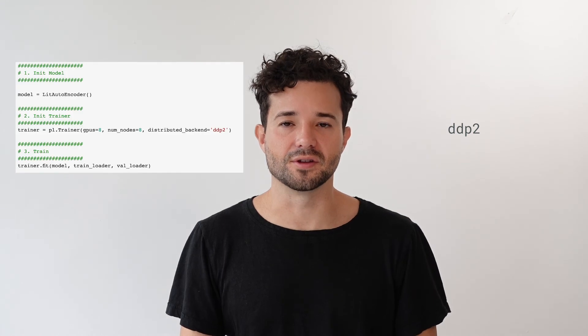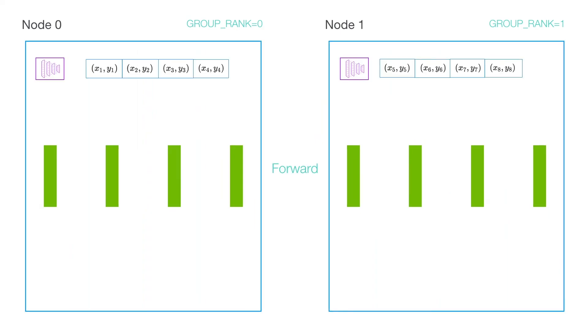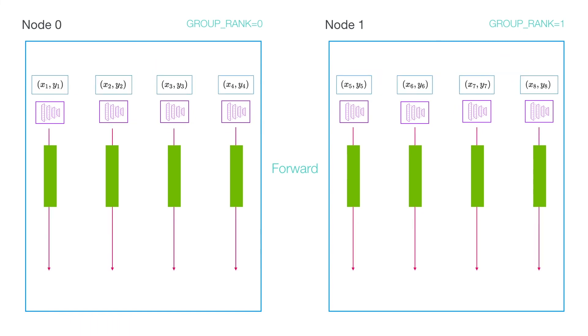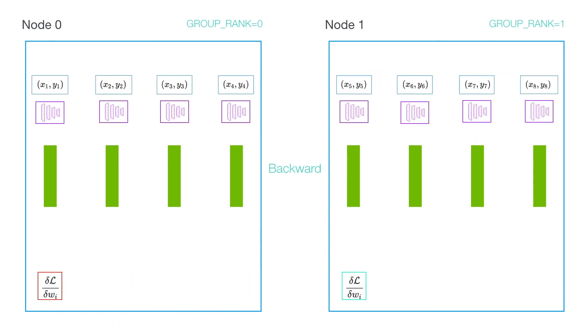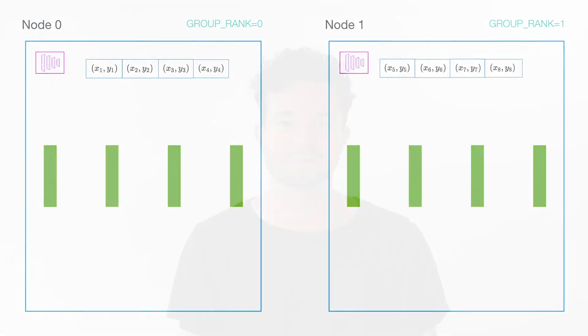There's another mode implemented in Lightning called DDP2, which is super useful if you're working with contrastive learning or anything with negative samples. It's a mixture of DP and DDP: on a single machine it works like DP, splitting the batch across GPUs, and then across machines it syncs gradients like DDP. This way, you can use all of the outputs of each GPU in the denominator of something like a softmax.